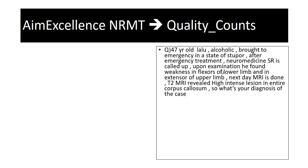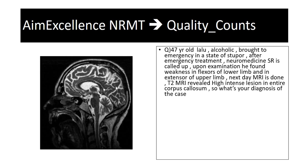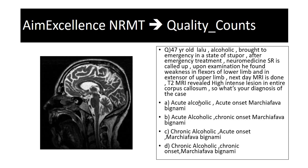Upon examination, he found weakness in the flexors of the lower limb and extensors of the upper limb. An MRI was done the next day, and on T2 MRI, there was a high-intensity lesion in the entire corpus callosum. So what is your diagnosis in this case?